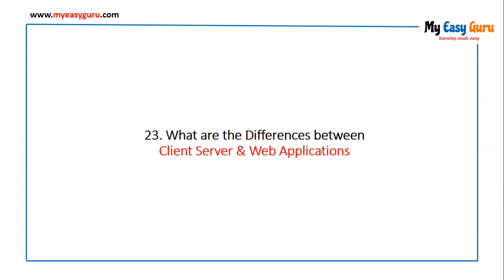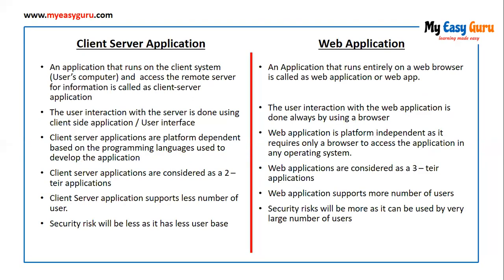What are the differences between client-server and web applications? A client-server application runs on the client system — the user's computer — and accesses a remote server for information. A web application runs entirely on a web browser. User interaction in a client-server app is done via a client-side application or UI, while in a web application it is always done using a browser. Client-server applications are platform dependent, while web applications are platform independent, requiring only a browser to run on any operating system.